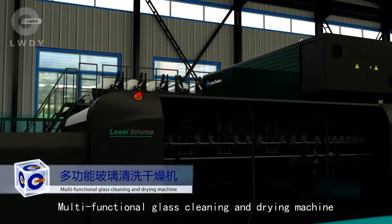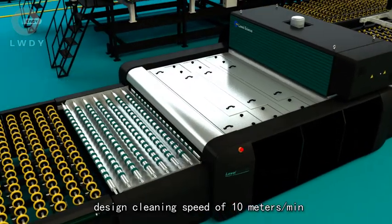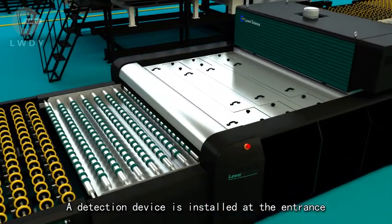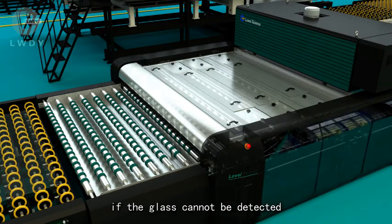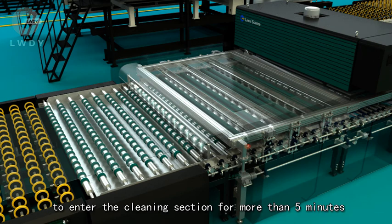Multi-functional glass cleaning and drying machine design cleaning speed of 10 meters per minute. A deduction device is installed at the entrance. If glass cannot be detected to enter the cleaning section for more than 5 minutes, the transmission motor and water pump will stop working automatically.